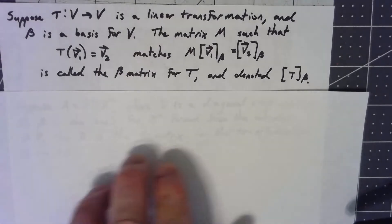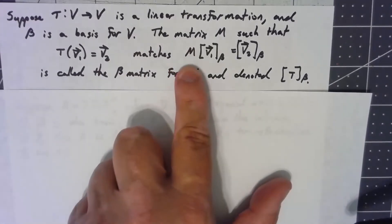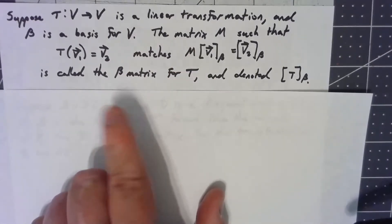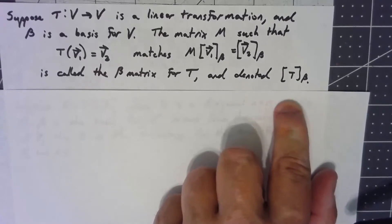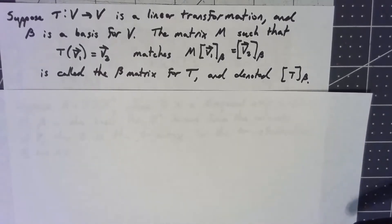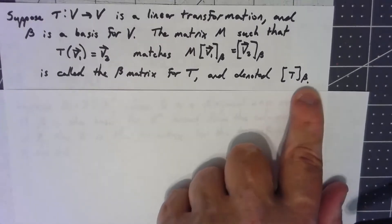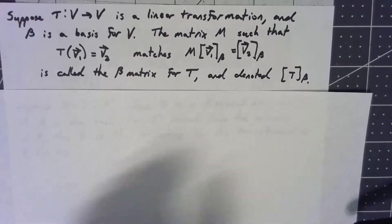When we do that, we're going to say that M, the matrix that does this, is called the beta matrix or B matrix for the linear transformation, and we're going to denote it by putting the transformation name in brackets sub beta, just like we've done with the coordinate vectors, but now we're talking about the transformation matrix with respect to that.